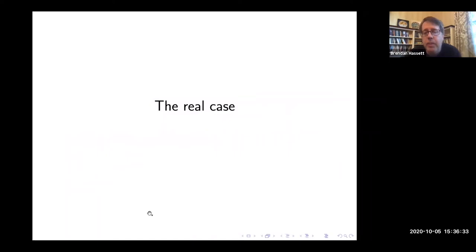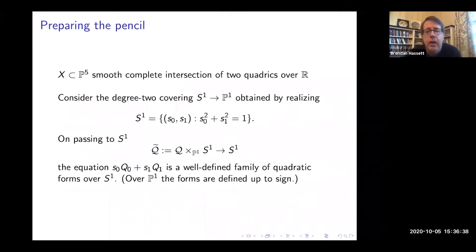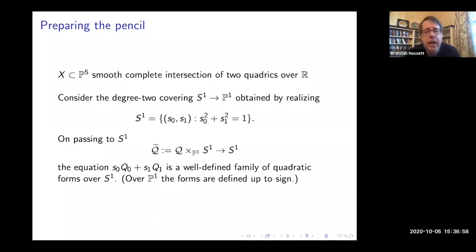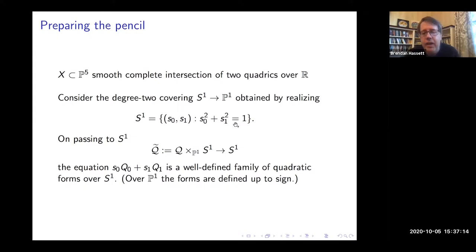I'm going to say a few words about the real case of this theorem, because I very much like the geometry. I'll describe how to get some invariants to analyze these complete intersections over the real numbers. We assume X is a complete intersection of two quadrics over the real numbers. I'd like to take a degree-two covering of P^1 and think of it as a circle S^1 — since S^1 and RP^1 are the same. From a projective geometry perspective, the unit circle maps two-to-one onto P^1. I can base change my pencil to this circle, and the advantage is that the defining equation over S^1 is actually well defined, avoiding sign confusion that arises projectively.